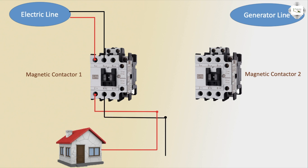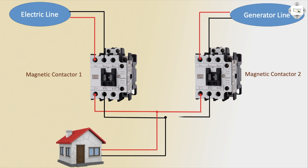Phase and neutral connection. Second generator line phase input — second magnetic contact terminal one connection, neutral connection. Second magnetic contact outgoing to magnetic contact one phase outgoing — short same to neutral, neutral short.